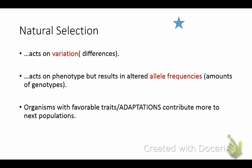Natural selection acts on variation — differences in a population. If you look at the population of people here, there are obvious variations between us: hair color, eye color, skin tone. Natural selection acts on phenotypes — the way physical characteristics are expressed — but it results in changed allele frequencies.